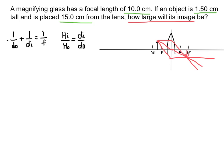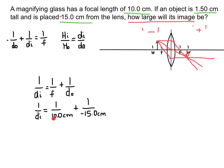Solving for image distance, I rearrange the equation by adding 1/d_o to move it to the other side. Plugging in the numbers: focal length is 10 centimeters, and the object distance is negative 15 centimeters because the object is on the negative side. So it's really 1/10 minus 1/15, and I end up with an image distance of 30 centimeters.